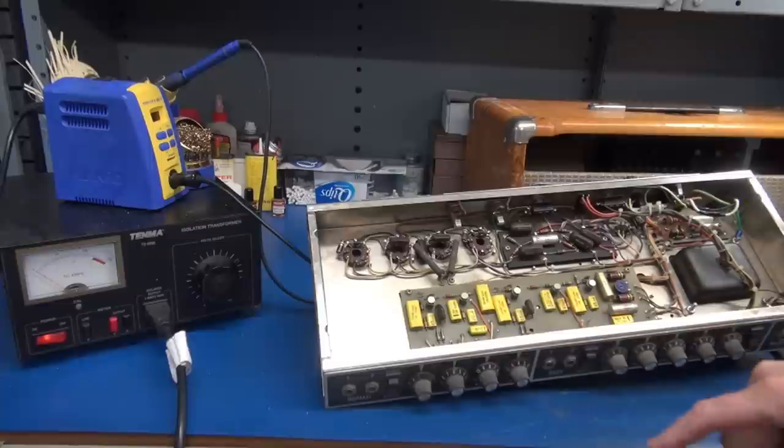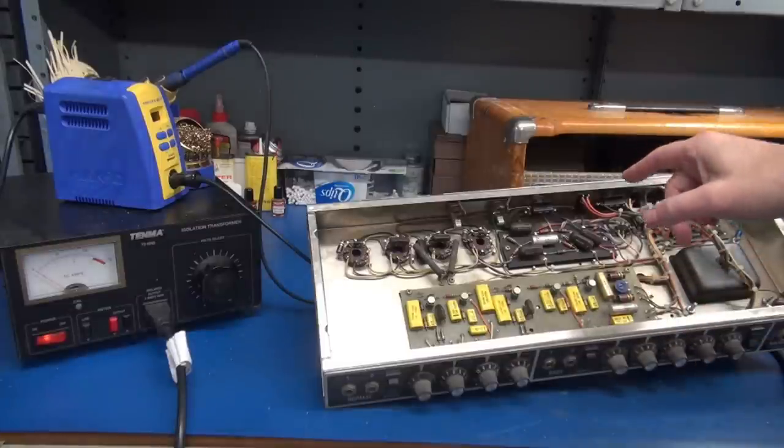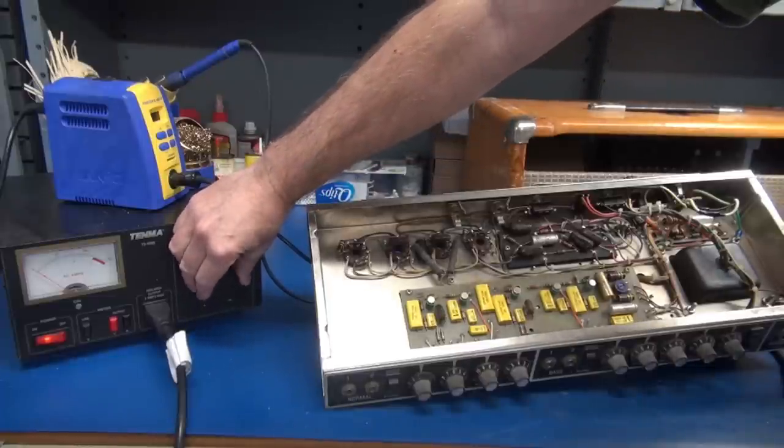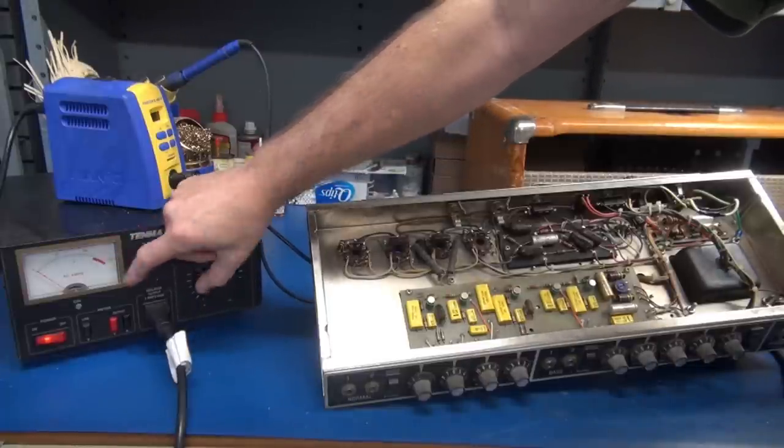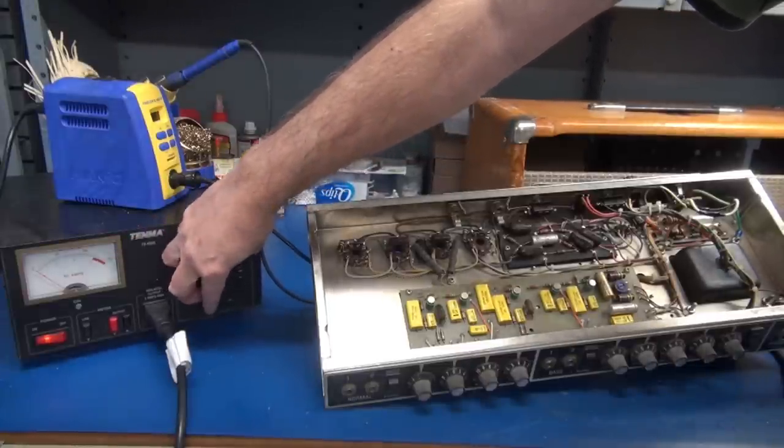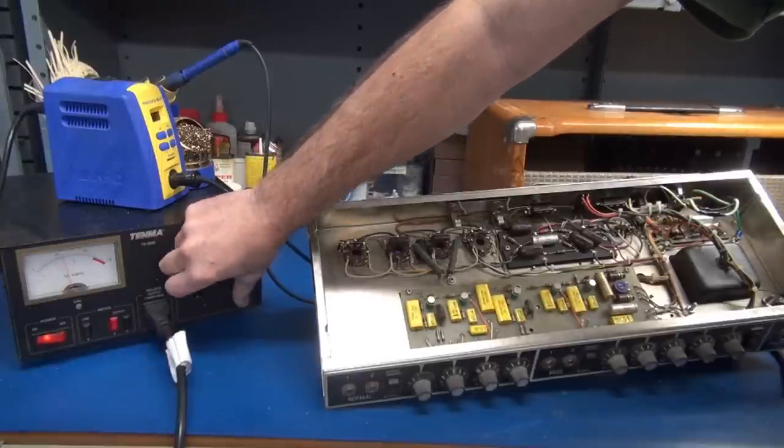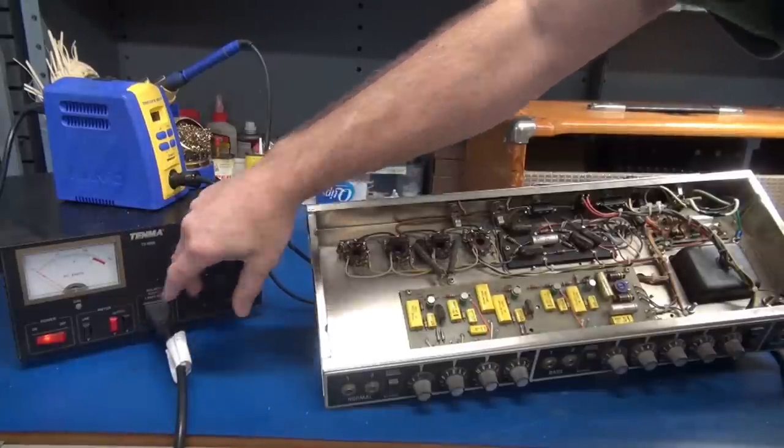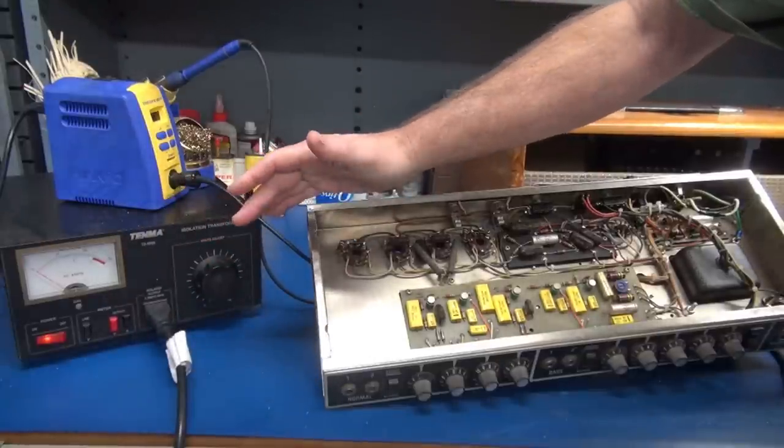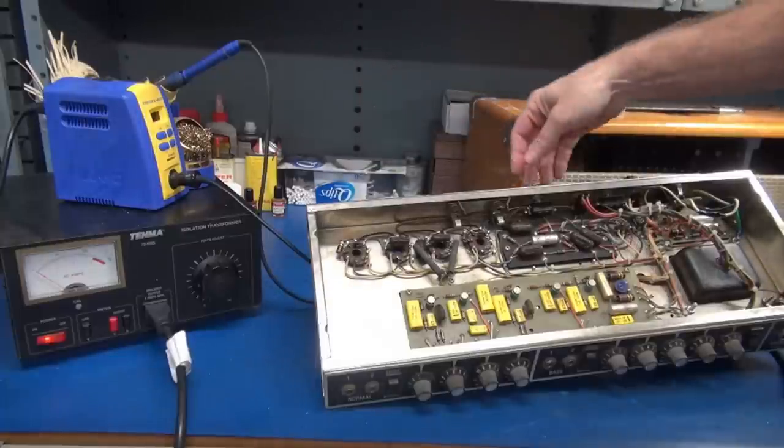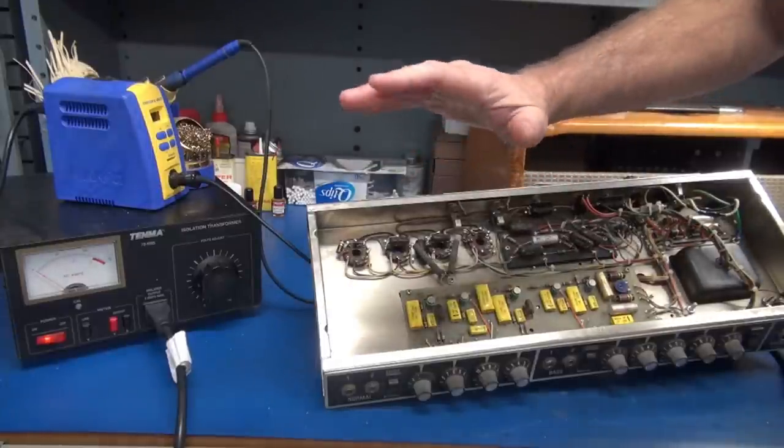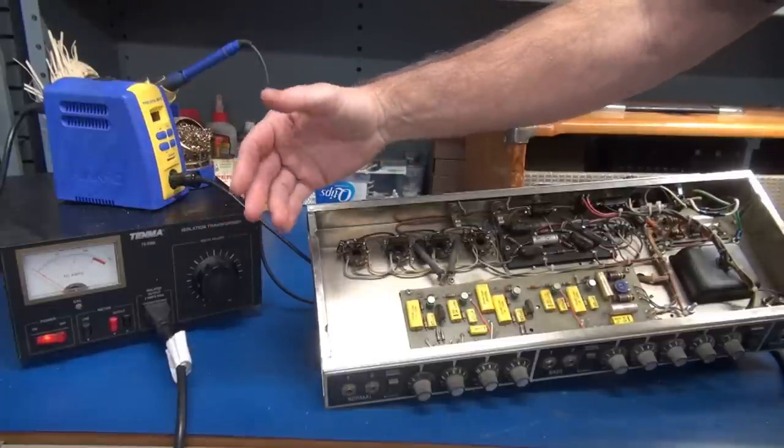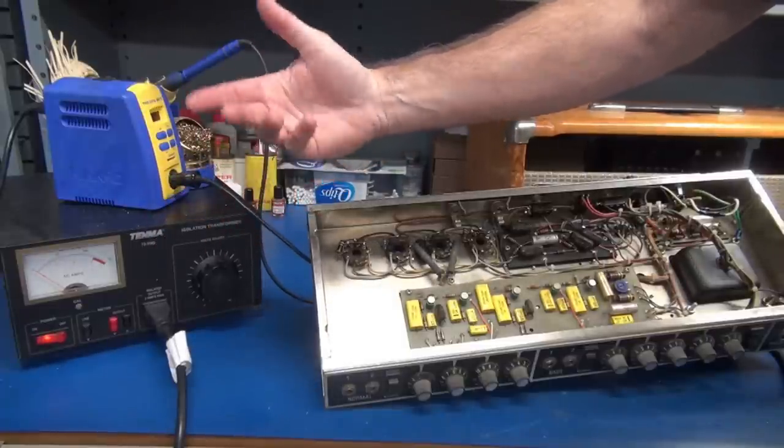So here we go. I've got the variac connected, tubes are removed, standby is off, main power switch is on. So when I bring up the variac, you should see little to no amperage on that meter. So you see I can go up to 50 volts. There's no current. That's because we have removed all the loads, meaning the output tubes. Now I'm going to turn on standby. We should have the same thing. That current meter should lay close to zero because there's no current path for the high voltage.